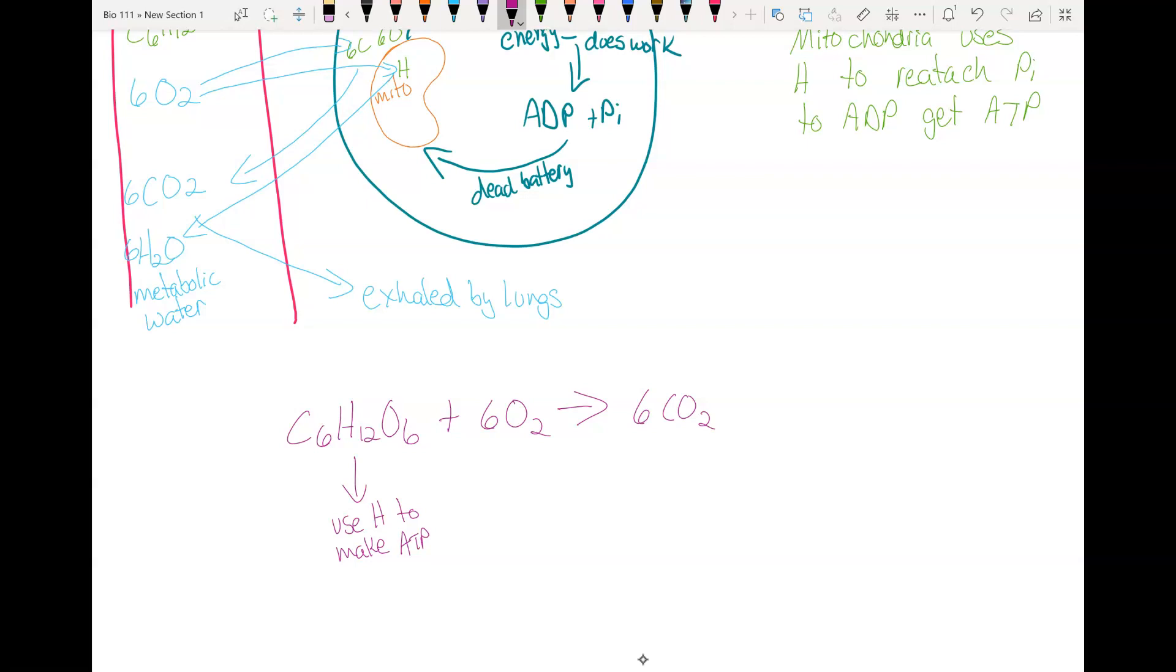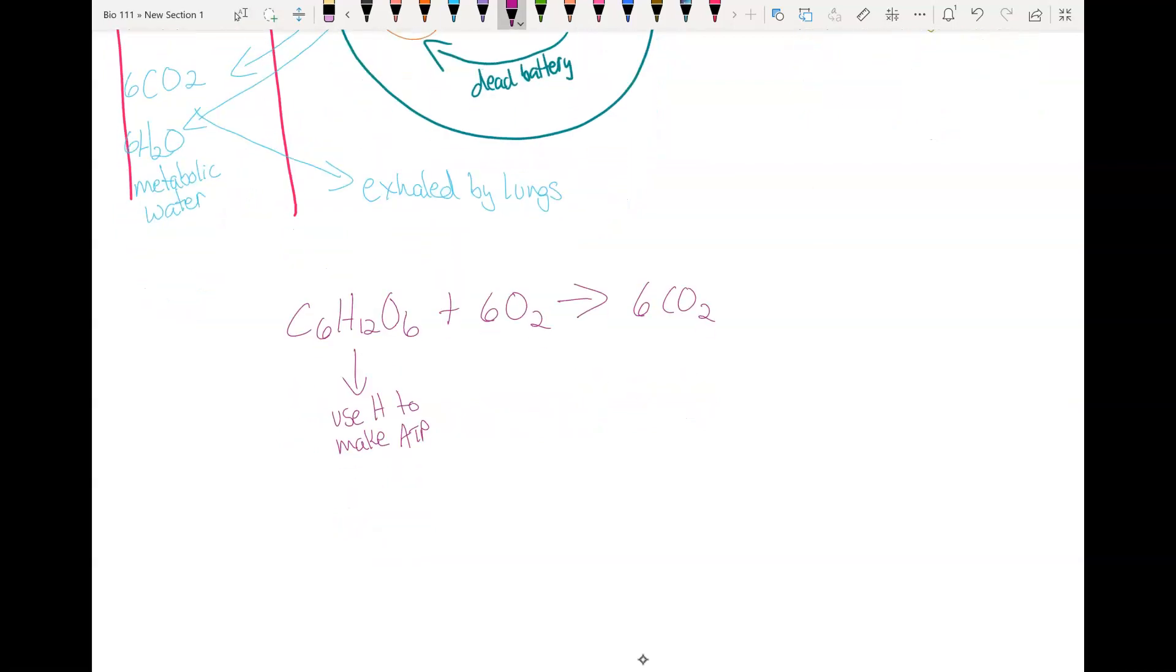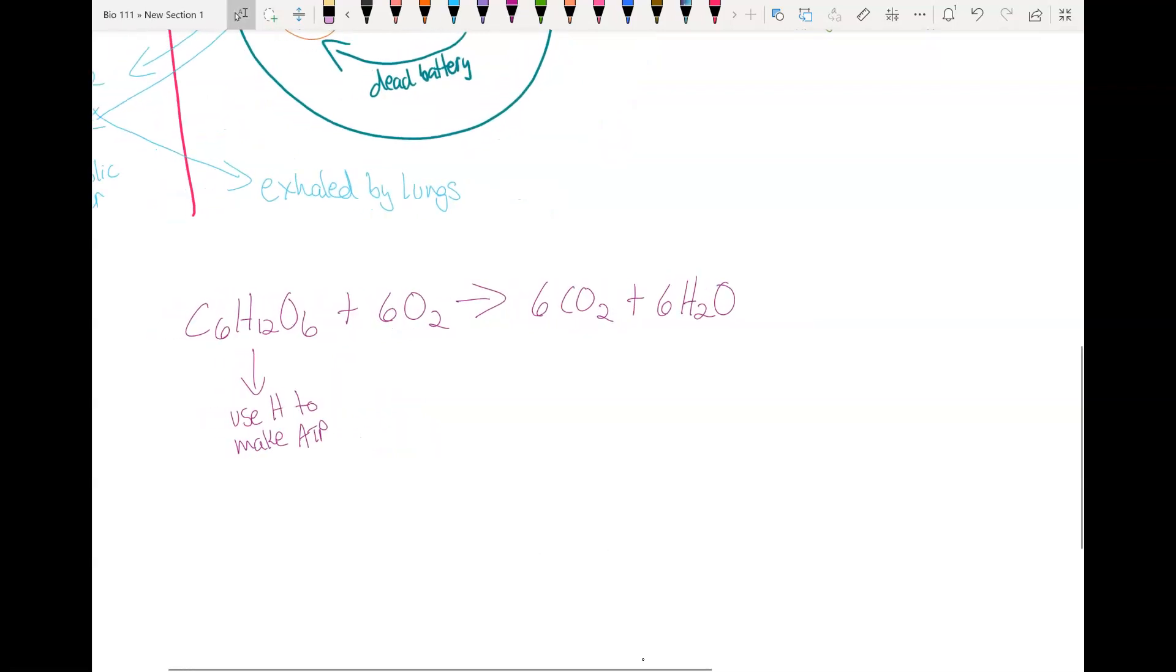Then you will have the hydrogen after you have used it to make ATP, and you'll get six metabolic waters. When you do this process, you get 36 ATP and you get your body heat. This is where body heat comes from, this process of making energy.